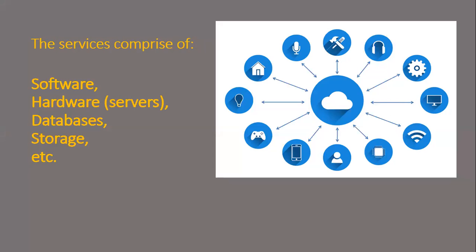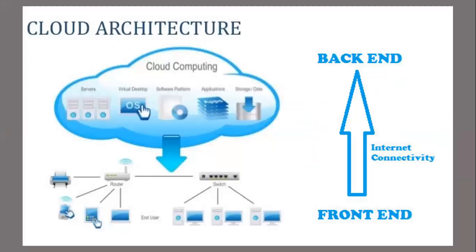The services offered over the internet or the cloud can be software, servers, databases, storage, and many other options. This is how a cloud architecture looks like. You can see there is a cloud with all the services inside it; on the front end are the users, the back end is the cloud computing, and in the middle of the two is the internet.